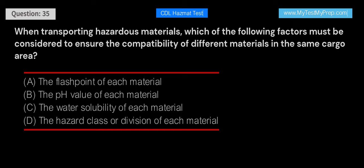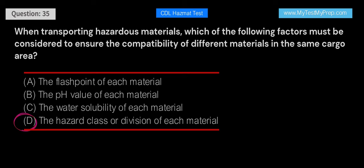When transporting hazardous materials, which of the following factors must be considered to ensure the compatibility of different materials in the same cargo area? A. The flash point of each material. B. The pH value of each material. C. The water solubility of each material. D. The hazard class or division of each material. Answer: D. The hazard class or division of each material must be considered to ensure the compatibility of different materials in the same cargo area. Incompatible materials can react with each other, potentially causing dangerous incidents. The hazard class or division helps categorize materials based on their risks and potential reactions.